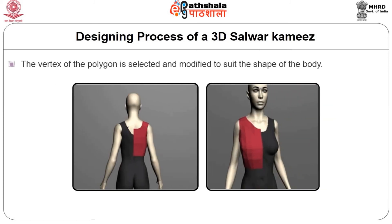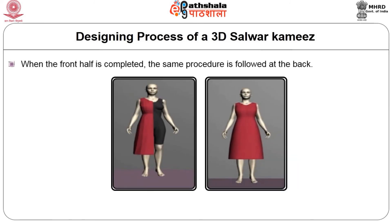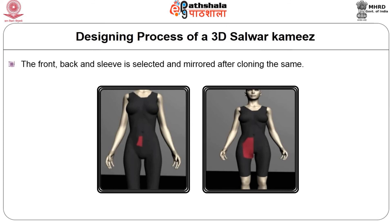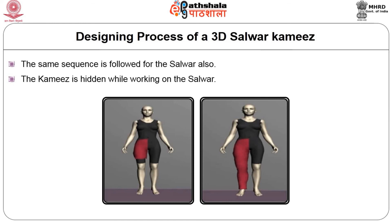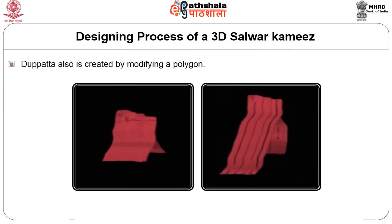The vertex of the polygon is selected and modified to suit the shape of the body, taking care that the polygon is draped evenly over the chest and waist. When the front half is completed, the same procedure is followed at the back. The sleeve for the right hand is also prepared in a similar fashion. The front, back and sleeve are selected and mirrored after cloning. This same sequence is followed for the salwar also. While working on the salwar, the kameez should be hidden to make the process easier. After the completion of the salwar, the kameez is unhidden and the model is unfrozen. The dupatta is also created by modifying a polygon.